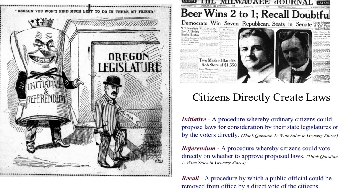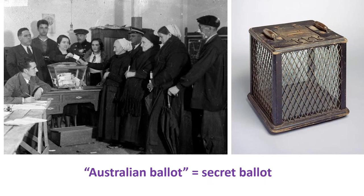Yet another area for reform was the political corruption mentioned earlier. In response, you begin to see things like citizen initiatives — where ordinary citizens could propose laws for consideration by their state legislature — or the referendum procedure, where citizens could vote directly on whether they approve certain laws, or the recall, allowing voters to remove officials early. There was also simply the idea of a secret ballot so everybody didn't know how you voted, something that originated from Australia — the Australian ballot.